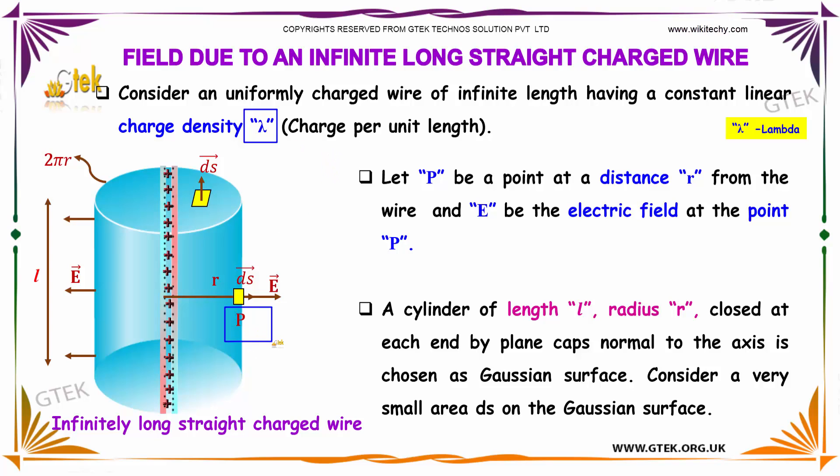Consider a point P at a distance r from the wire. Let E be the electric field at point P. A cylinder of length L and radius r is shown here - this is the radius and this is the length.